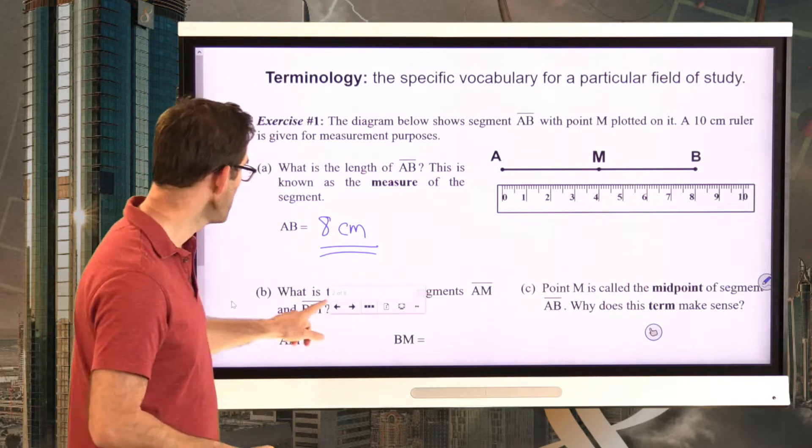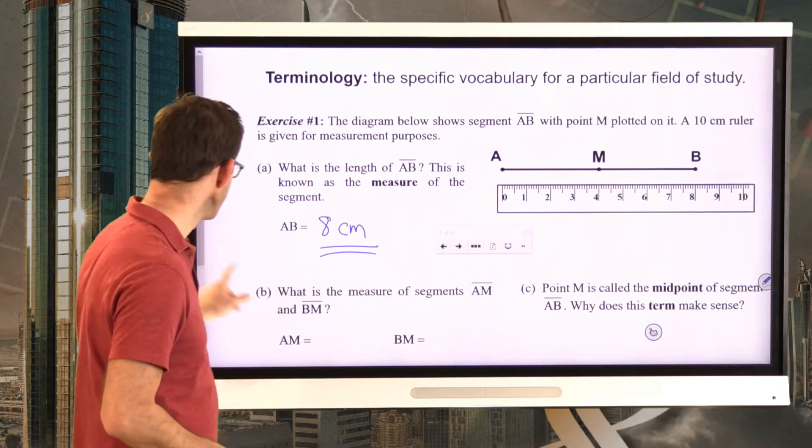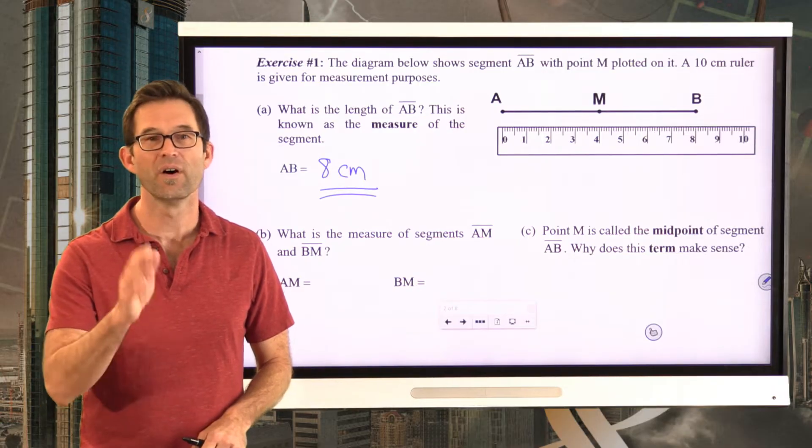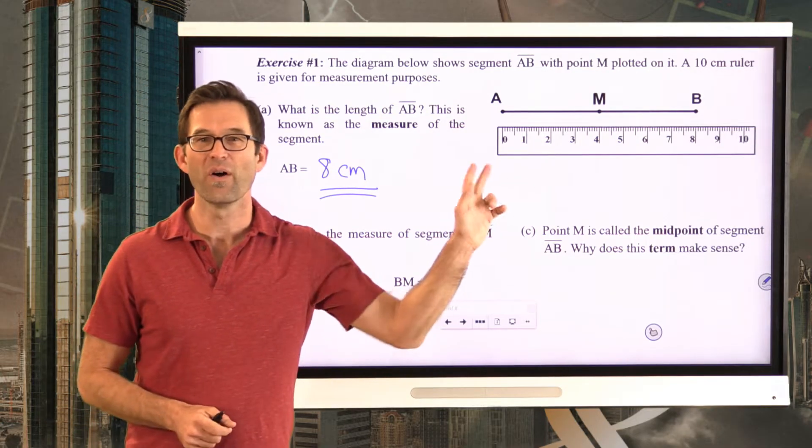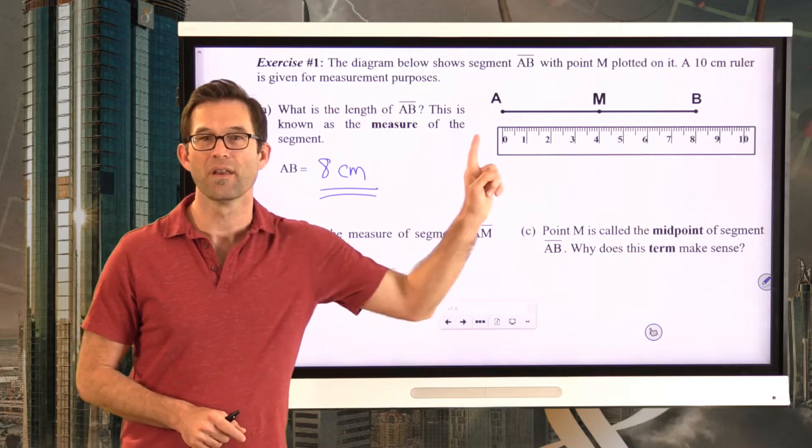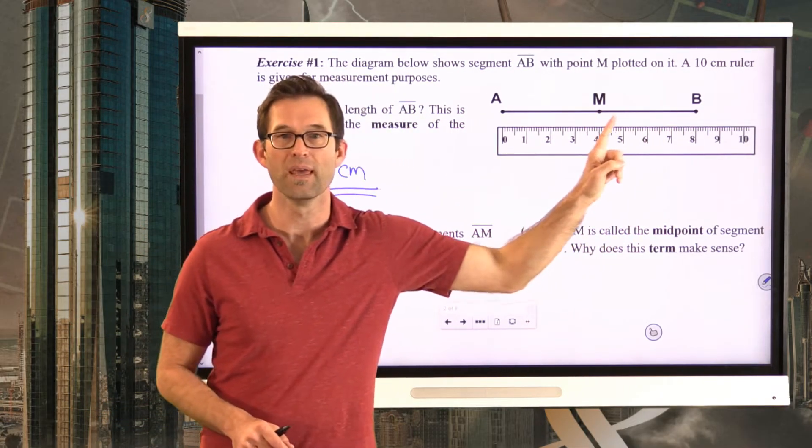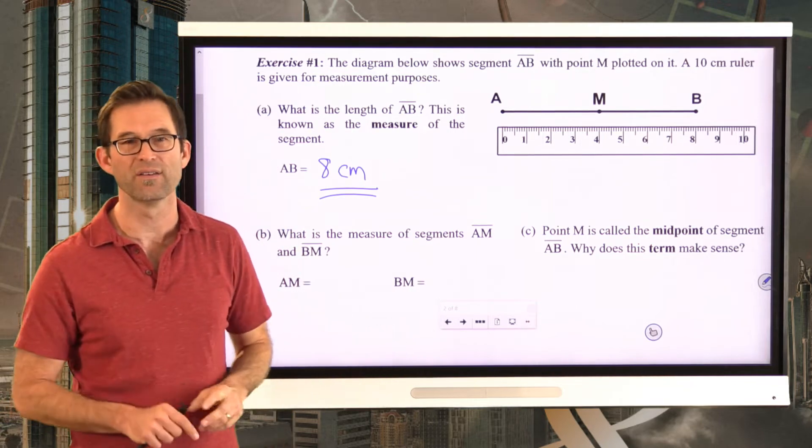Let's keep going and maybe move this out of the way. Choice B, or letter B. What is the measure of segments AM and BM? Alright, simple enough. Pause the video now. Go ahead and figure out what the measure of segment AM is and what the measure of segment BM is. This should be pretty easy.